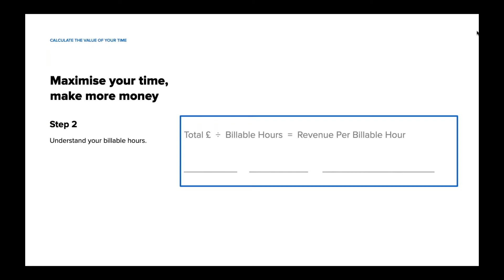A billable hour is the time you spent doing things that only you can do — like working with clients, creating renderings, or choosing furniture and materials. Look through your work logs and invoices to see how much time you spent on tasks only you could do, or estimate if you didn't keep track. Now take the total amount of revenue you generated last year and divide it by the number of billable hours to see your revenue generated per billable hour.